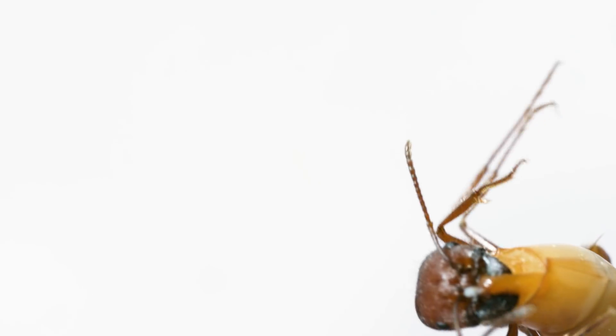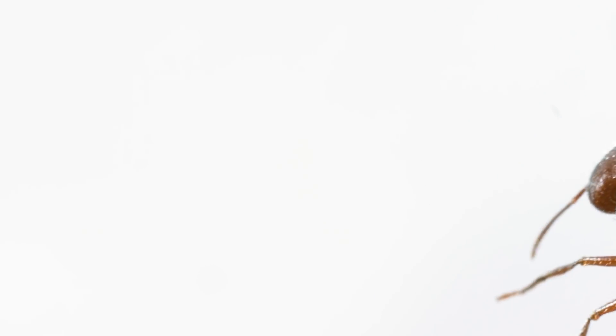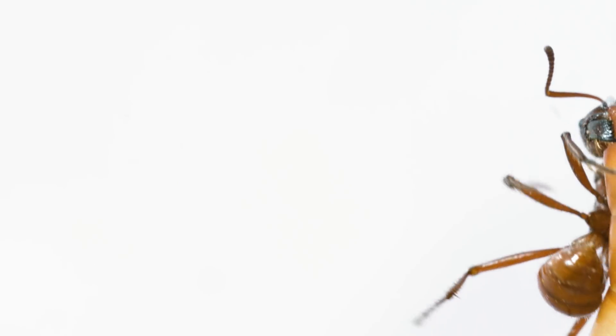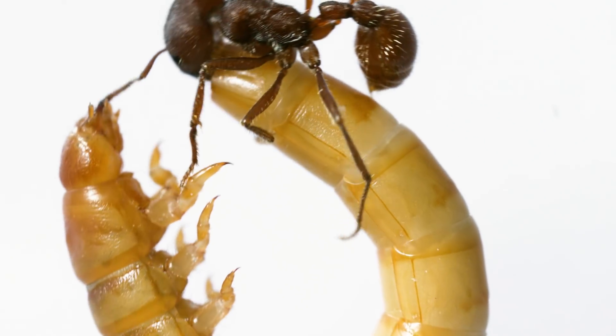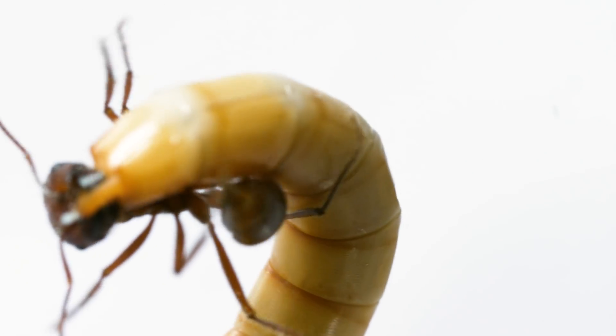For example, this is an ant trying to sting a mealworm. This is slow motion footage 25 times slower than real life. If the ant wants any chance of successfully delivering venom, it has to be fast.